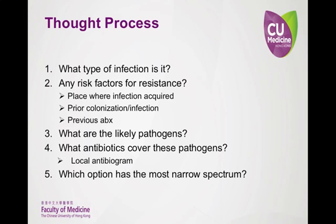Once you know what type of infection you are treating, you need to determine if the patient has any risk factors for resistance. The three risk factors with the most supporting evidence are: where did the patient acquire the infection — such as in the community, a hospital, or an old age home — and whether the patient has had any recent infections or received antibiotics recently.